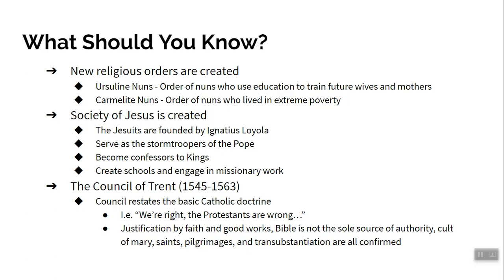Then there's the Society of Jesus — probably the most important thing to come out of the Catholic Church since the 1500s. The Jesuits, created by Ignatius Loyola, are like the stormtroopers of the Catholic Church. Whenever the Church needs something done or someone converted, the Jesuits are there. They went to South America, North America, Asia, and Africa. They became confessors to kings, did missionary work, and created schools. The Jesuits are going to affect a lot of things going forward.